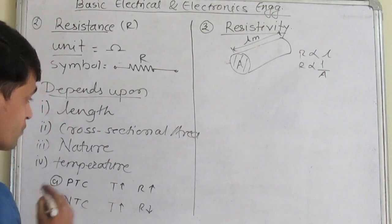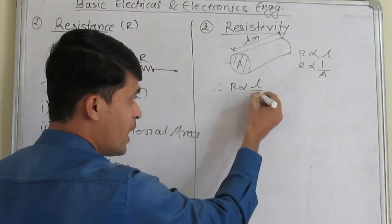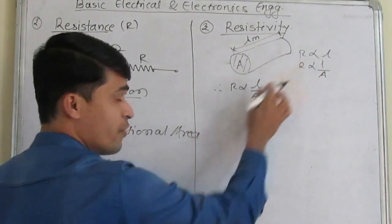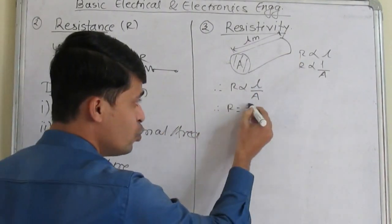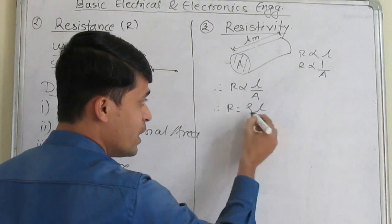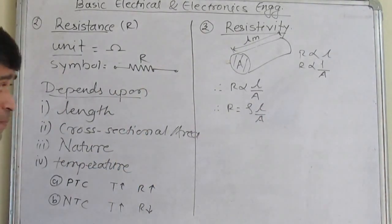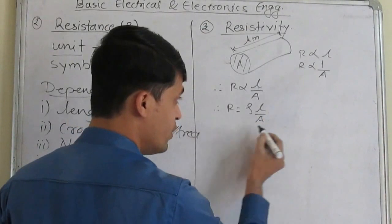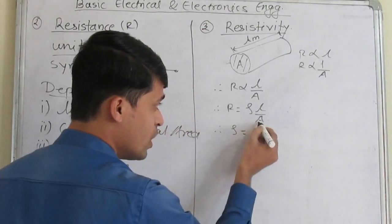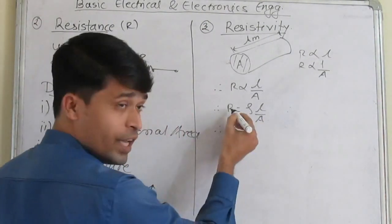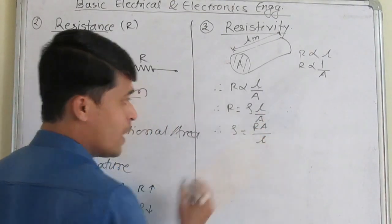Therefore, resistance is directly proportional to L upon A. From these two equations, R is equal to Rho times L upon A, where Rho is considered a constant called resistivity. Rho is called resistivity, therefore resistivity is equal to R into A upon L.